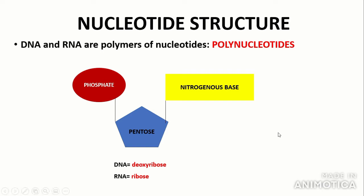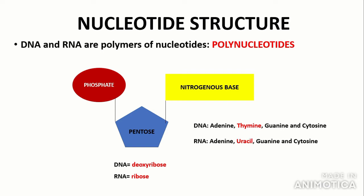The third component is a nitrogenous base, which forms the backbone of the double or single helix. The bases in DNA are adenine, thymine, guanine, and cytosine. In RNA, thymine is replaced by uracil; adenine, guanine, and cytosine remain the same.